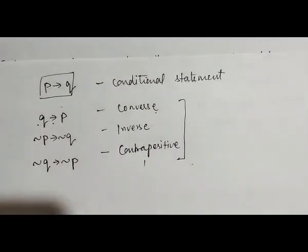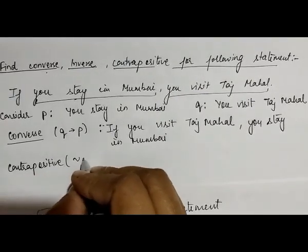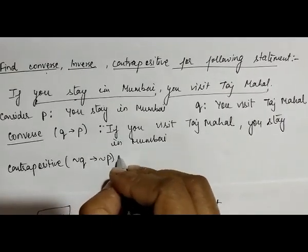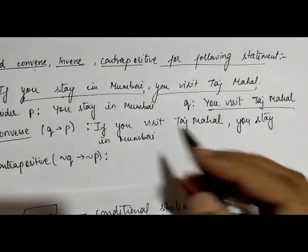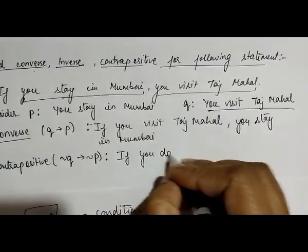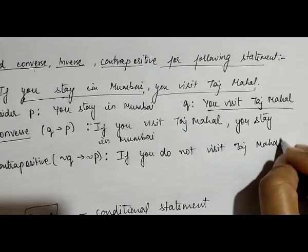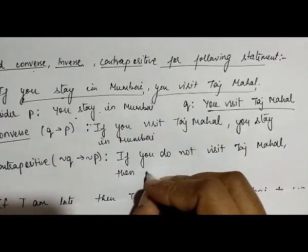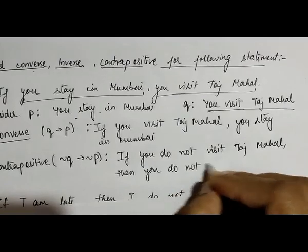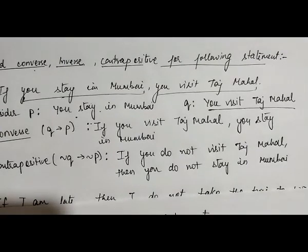For the contrapositive, we make it 'not q then not p'. So the contrapositive statement is: 'if you do not visit Taj Mahal then you do not stay in Mumbai'.